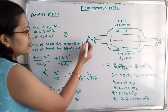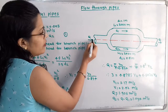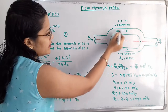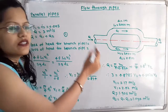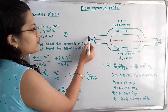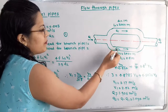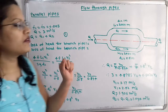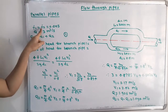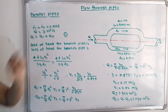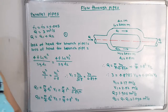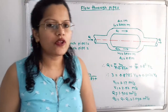From the diagram, the initial discharge Q divides into Q1 and Q2 at the junction, so we can write: Q = Q1 + Q2. The coefficient of friction for both pipes is equal: f1 = f2 = 0.005, and the total discharge Q = 3 cubic meters per second.